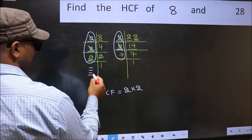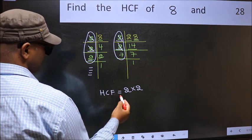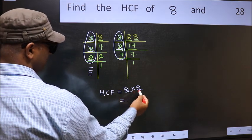No more numbers have been left out. So our HCF is 2 times 2, which is 4.